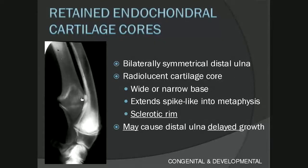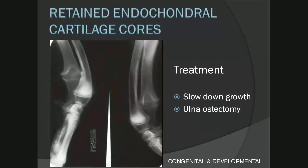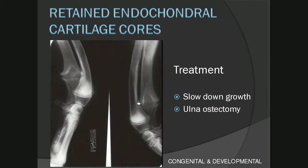The cartilage core can cause delayed distal ulnar growth. Treatment involves attempting to slow down growth by correcting the diet and not giving any supplements. If there is evidence of delayed ulnar growth, an ulnar ostectomy can be considered. In the images shown, there are bilateral retained endochondral cartilage cores in the ulna, with evidence that the ulna is growing slower than the radius because the radius is starting to bow.